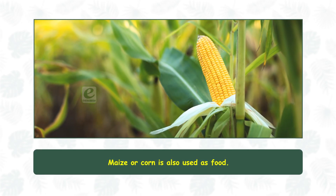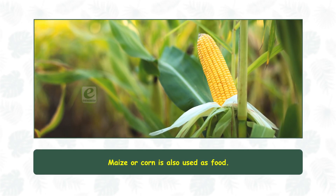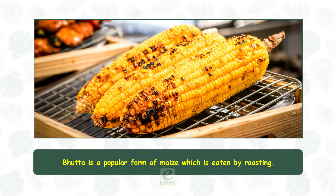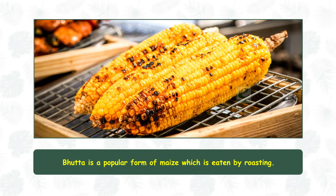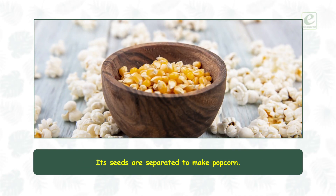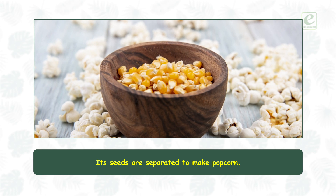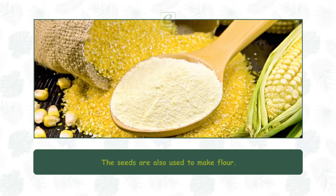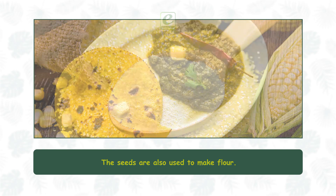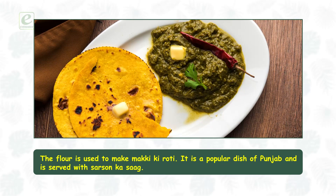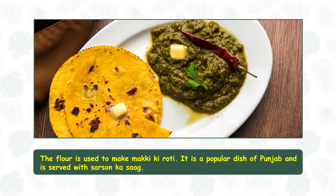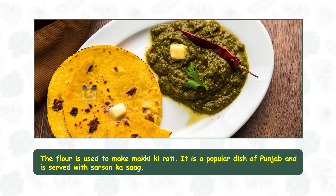Maize or corn is also used as food. Bhutta is a popular form of maize, which is eaten by roasting. Its seeds are separated to make popcorn. The seeds are also used to make flour. The flour is used to make makki roti, which is a popular dish of Punjab and is served with sarson ka saag.